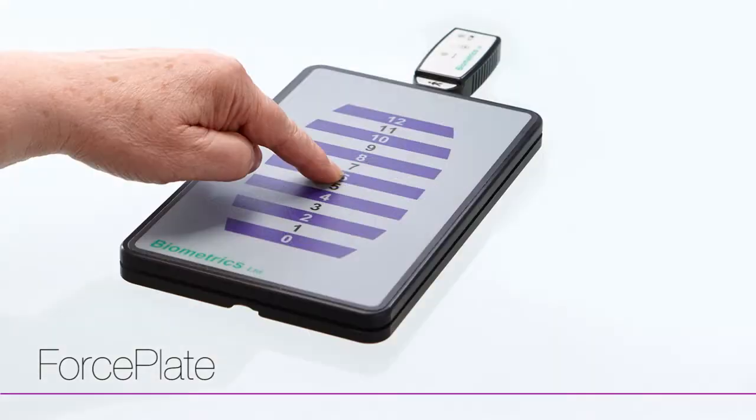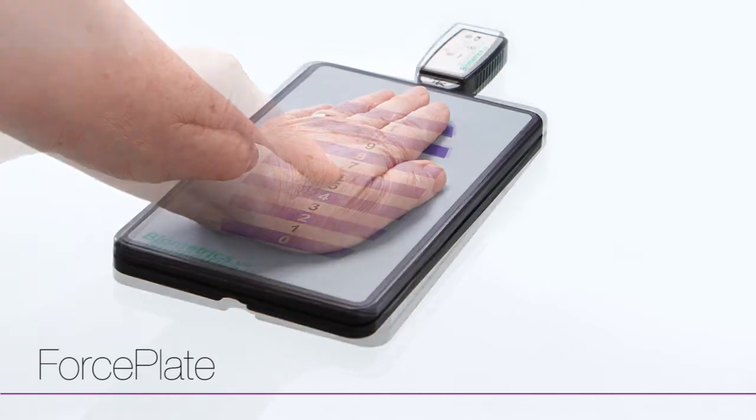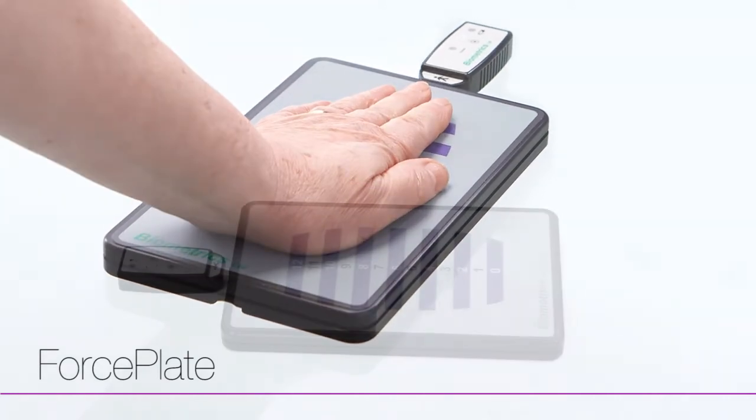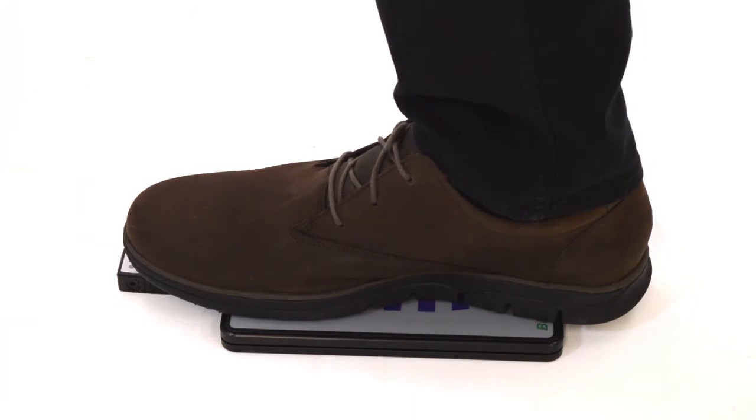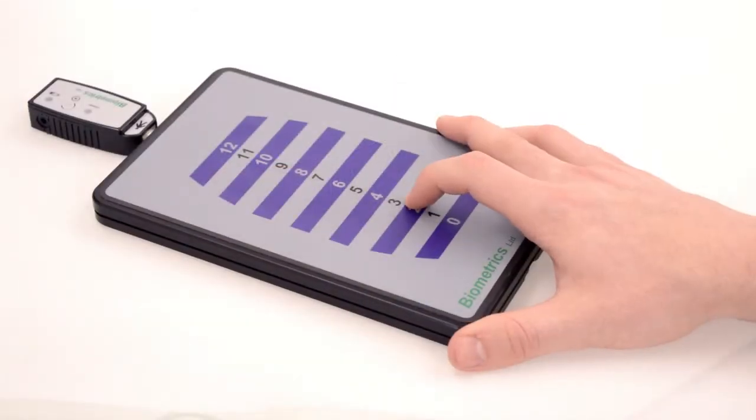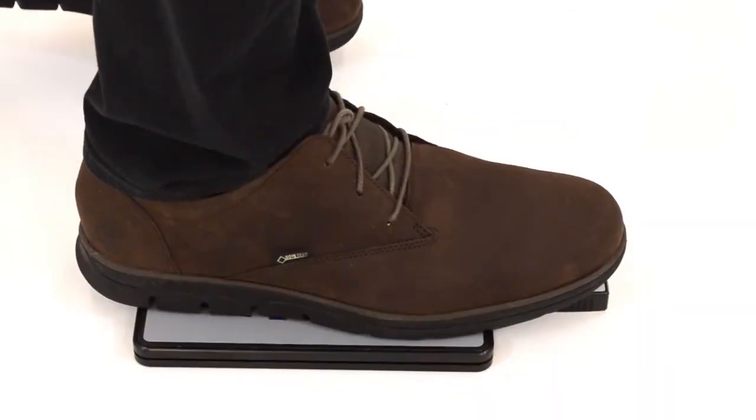The e-link force plate registers weight as little as 0.1 to 100 kilos or 0.1 to 220 pounds. It is perfectly designed for both upper and lower extremity weight bearing exercise, accepting the light touch of one finger through to full weight bearing on one limb.